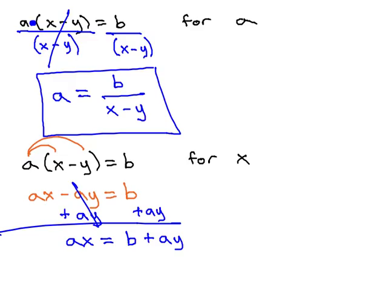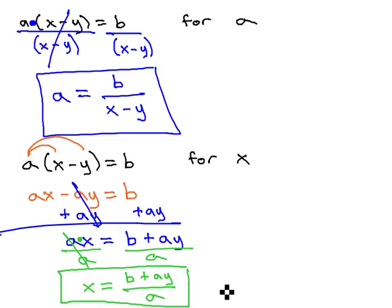Finally, we can get the x alone. It's a times x. To isolate the x, we divide out and get rid of the a on both sides. This gives us x equals b plus ay over a. If the x is alone like we want, this becomes our final solution.